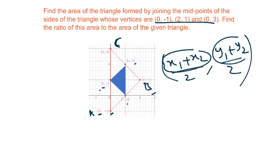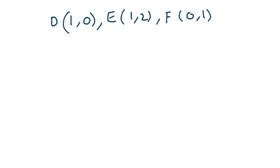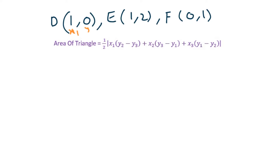Now we have the small triangle — I'll call it DEF. We have to find the area of triangle ABC and triangle DEF. First, we will find the area of triangle DEF using the area of triangle formula. Let us consider the coordinates as (x1, y1), (x2, y2), and (x3, y3) and substitute.